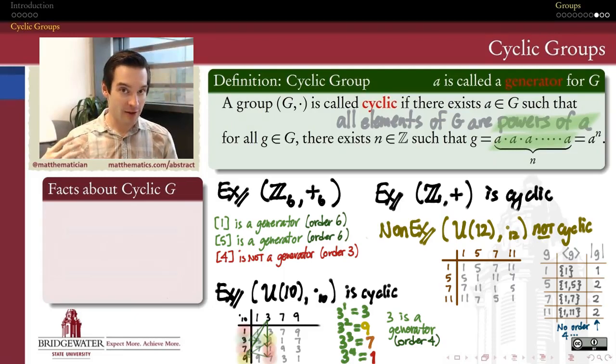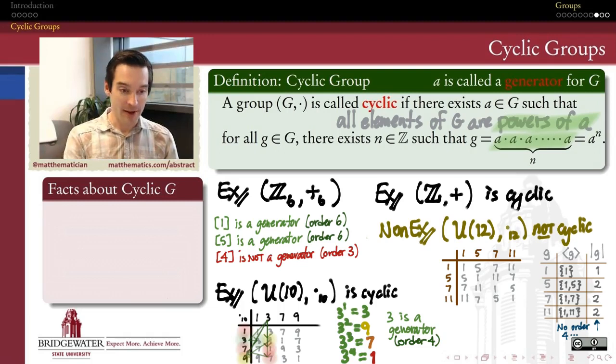By now, cyclic groups should begin to feel like an old pair of shoes - familiar, comfortable. They come from contexts that we find really concrete and familiar: integer addition, integer addition modulo n.